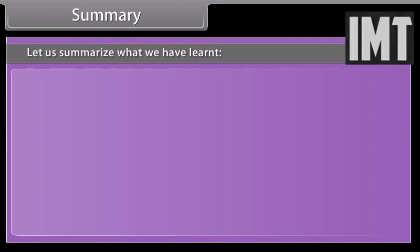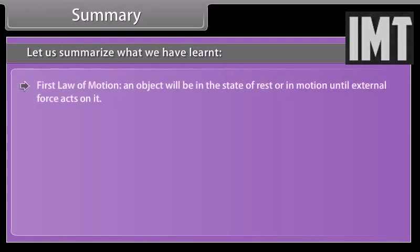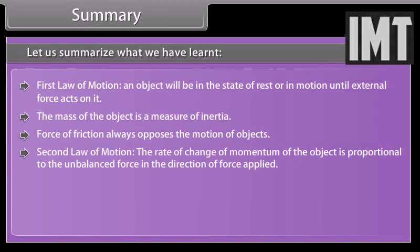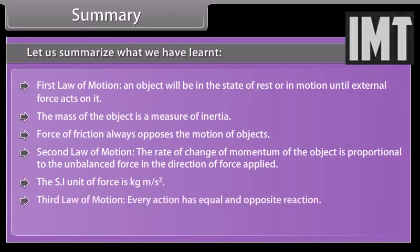Let us summarize what we have learned. First law of motion: an object will be in the state of rest or in motion until external force acts on it. The mass of the object is a measure of inertia. Force of friction always opposes the motion of objects. Second law of motion: the rate of change of momentum of the object is proportional to the unbalanced force in the direction of force applied. The SI unit of force is kilogram meter per second square. Third law of motion: every action has equal and opposite reaction. The total momentum is always conserved.